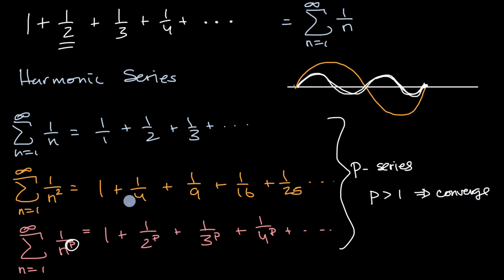And that makes sense intuitively because that means that the terms are getting smaller and smaller fast enough. Because the larger the exponent for that denominator, that means that the denominator is going to get bigger faster, which means that the fraction is going to get smaller faster.